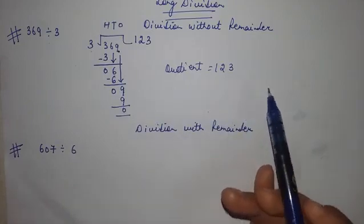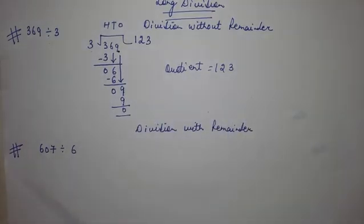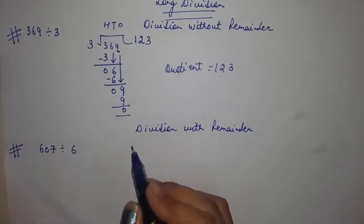Now next term is division with remainder. Now the number is given 607 divided by 6. Now let's divide these two numbers.